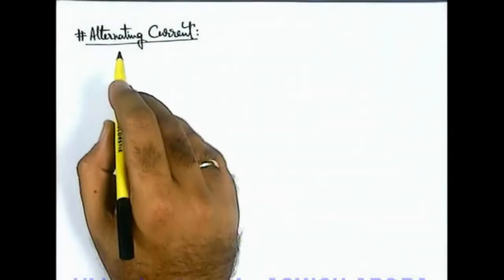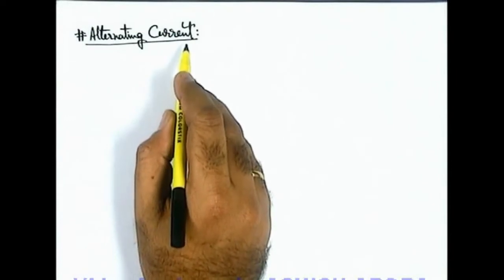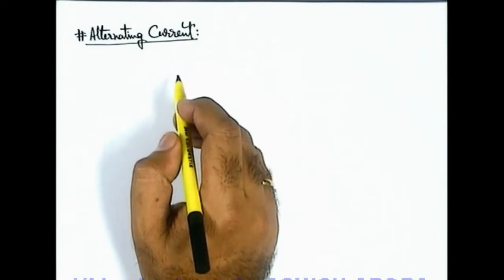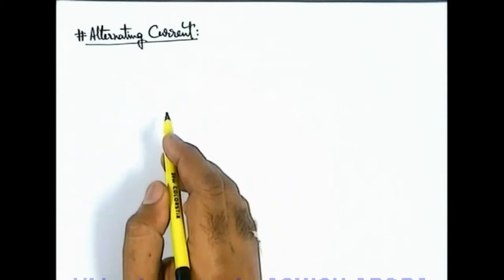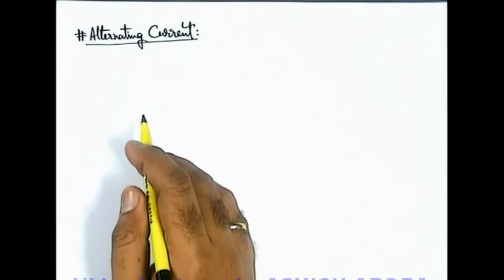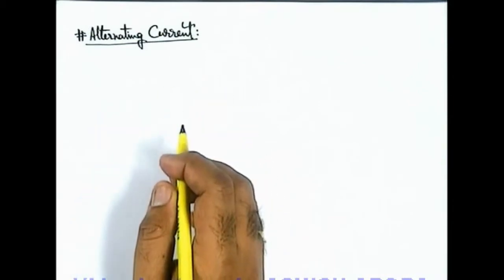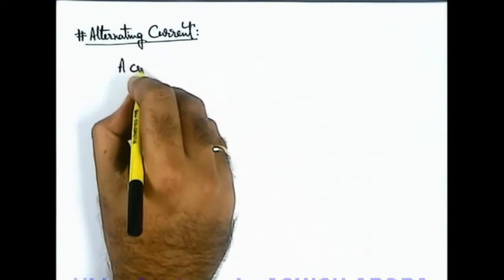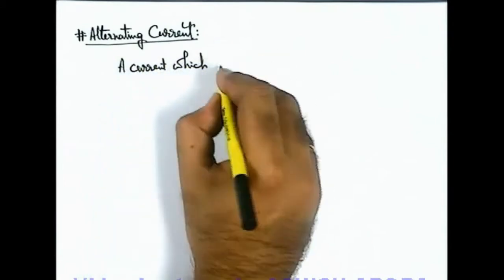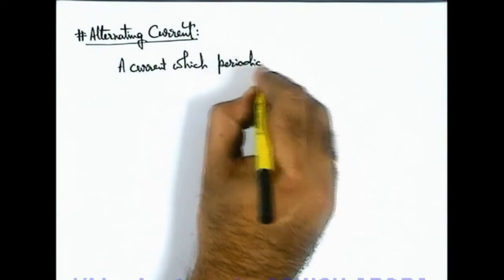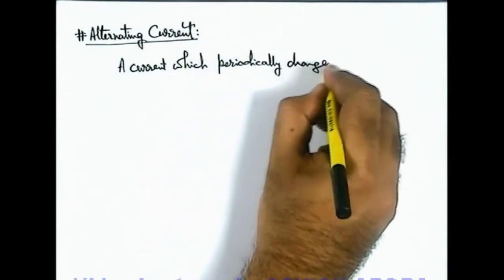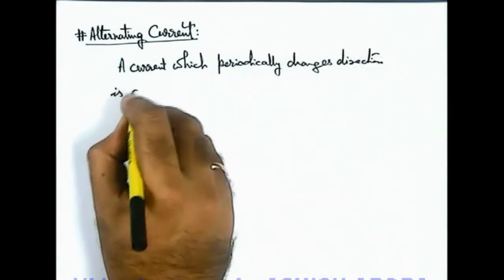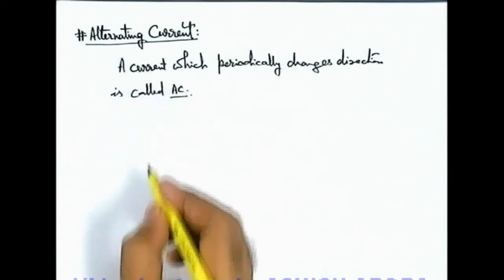Dear students, let's start with the topic of alternating current. We have already discussed direct current and circuits related to direct current in detail in the topic of current electricity. Now we'll study how alternating current affects different kinds of circuits and circuit parameters. The very first thing is: what is an alternating current? It is a current which periodically changes direction, and is called an alternating current, abbreviated as AC.